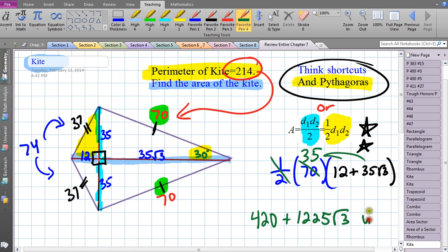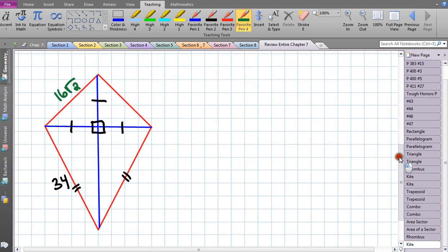That's a tough problem. There's a lot of things to connect - properties of a kite, the perimeter of the kite, knowing the formula for area of a kite, understanding how we use our 30-60-90 shortcut, and how we use Pythagoras to put it all together. Let's do one more kite.